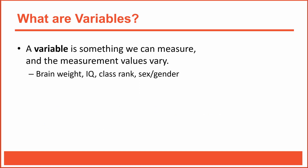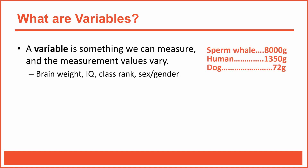So what is a variable? You probably remember learning about variables in your statistics class, but let's review. A variable is simply something we can measure, and the measurement values vary—in other words, the measurement values differ. The average brain weight of a species is a variable because weight values differ for different species. In this example, there are two variables: the type of species—sperm whale, human being, dog—and brain weight. Those values we measure are often called levels. We can see three different levels of species and three different levels of weight, though for both variables, many other possible levels exist.